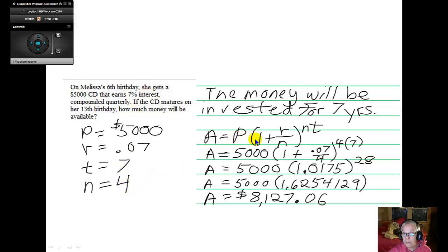I take these numbers and I put them in for the letters in the formula. I carefully follow order of operations. That's what I get when I say 1 plus .07 divided by 4. Raise it to the 28th power, which is 4 times 7. That raised to that power, that is 1.0175 raised to the 28th power, is this very ugly decimal, which I multiply by P, 5,000, and I get $8,127.06 that Melissa, with her parents' consent, will be able to withdraw on her 13th birthday. I think she should leave it in the bank until she goes to college, but no one is asking me.